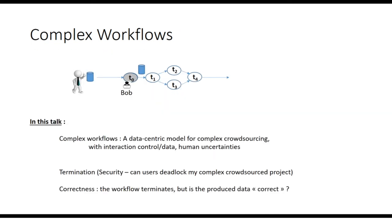In this context, an execution of a complex workflow is an orchestration of successive data transformations, distribution and aggregation. In some cases, an execution may not terminate or may forge data values that are not compatible with the results expected by a client. In this talk, you will learn how to define complex data-centric processes with our language called complex workflows, and you will see how to address the termination question and decide whether a complex workflow is correct and always returns correct data.